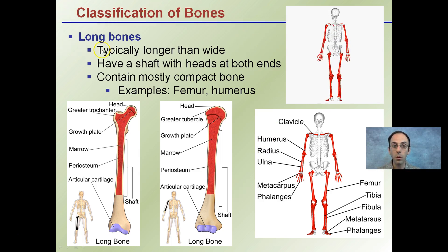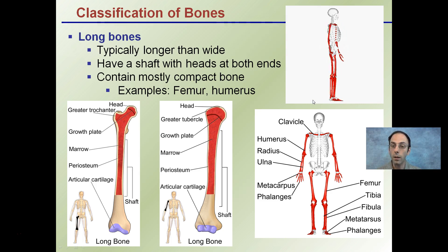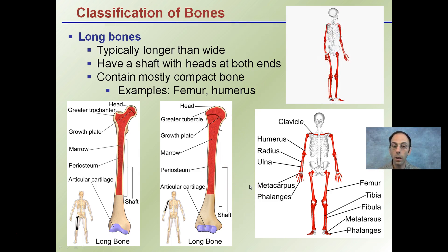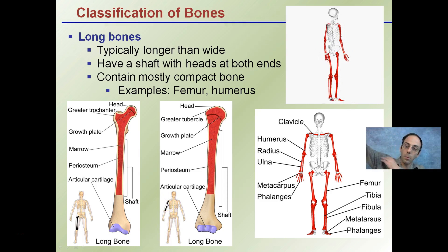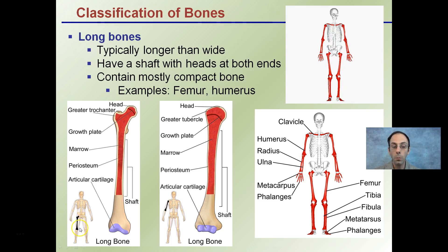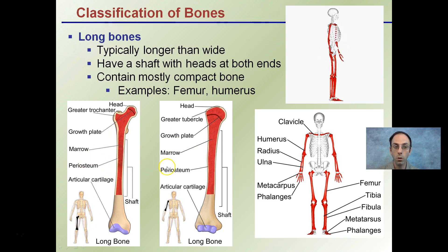Classification of bones — let's start with the long bones. They're typically longer than they are wide, and that's how they get the name long bones. Highlighted in red here on our slowly rotating skeleton, you can identify some of the regions where you can find these long bones. They have a shaft with heads at both ends. The heads at both ends might be different, but there is a head region at both ends. They contain mostly compact bone, and examples would be the femur and the humerus. The humerus is located in the upper arm, and the femur is located down in the upper leg.